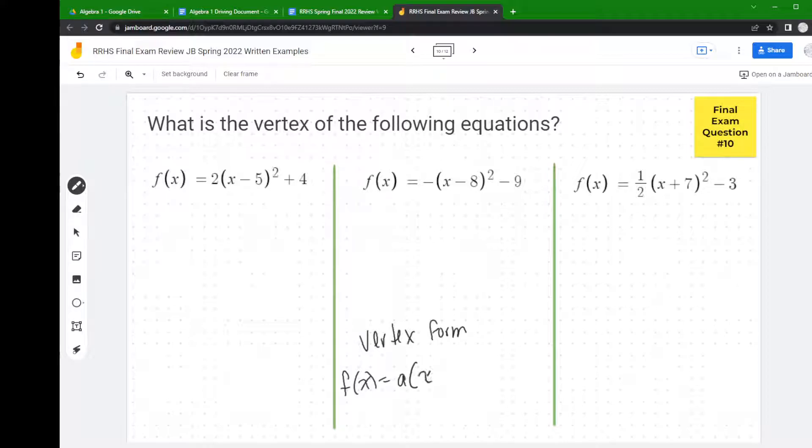The a times (x minus h) squared plus k, and so the vertex just lies at the ordered pair (h, k).